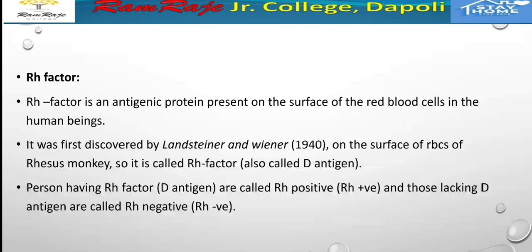The Rh factor is an antigenic protein present on the surface of red blood cells in human beings. The Rh factor can be positive or negative. It was first discovered by Landsteiner and Wiener in 1940 on the surface of RBCs of the rhesus monkey, which is why it is called the Rh factor.